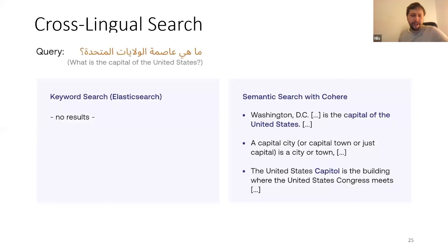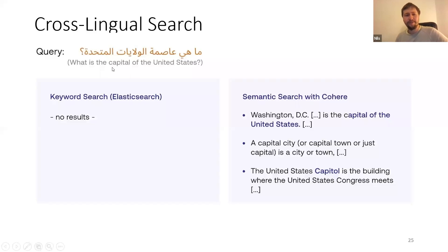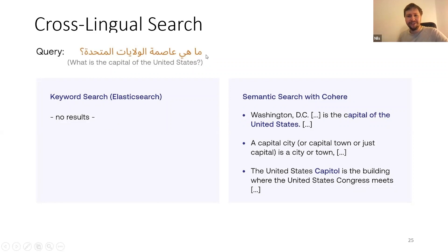One absolutely amazing capability of these embedding approaches is cross-lingual search. You can type a query in any of a hundred languages. Here it's in Arabic — my colleague Amr was kind enough to provide this — asking 'What is the capital of the United States?' You search the English Wikipedia, and Elasticsearch has no idea what the Arabic text is. But with semantic search there's no problem matching it, because the Arabic text maps to a vector really close to the English 'What is the capital of the United States?' and you get a perfect match to Washington D.C.